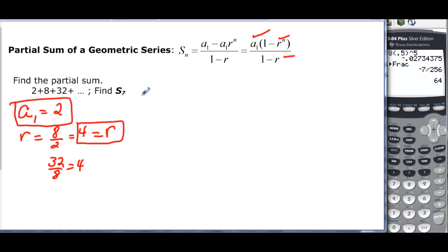The only other thing we need to know is that n is equal to 7, so s sub 7 equals a sub 1, which is 2, times 1 minus my ratio, which is 4, to the n, which happens to be 7, and then I have 1 minus my common ratio, which is 4. Well, if I do that, I'm just going to come to my calculator and simplify the top, but I know this is going to be negative 3.